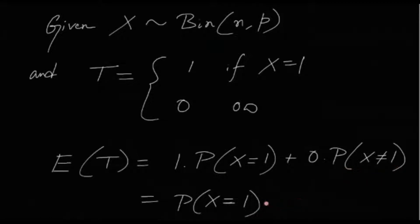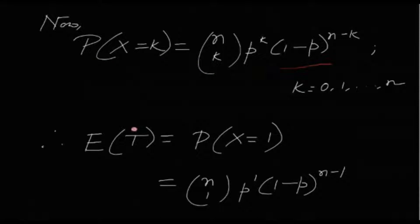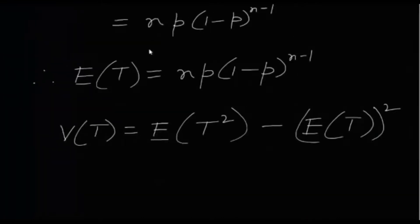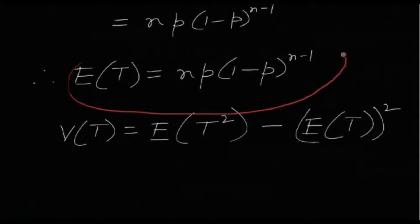Using the PMF, P(X = 1) = C(n,1) · p^1 · (1−p)^(n−1) = n · p · (1−p)^(n−1). So E(T) = n · p · (1−p)^(n−1). This is a very straightforward direct application of the formula.